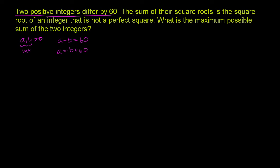Now for the second sentence: the sum of their square roots — square root of a plus square root of b — is equal to the square root of some integer c. C is an integer, but it's not a perfect square. So the square root of c is not an integer.